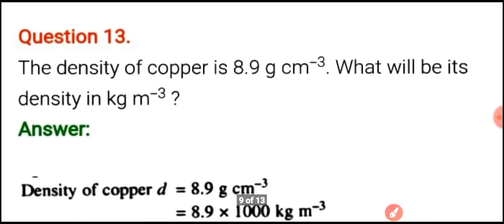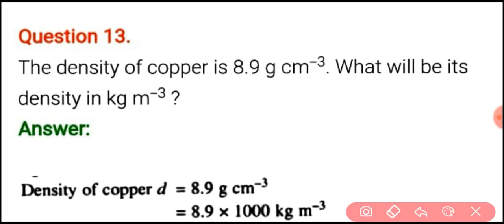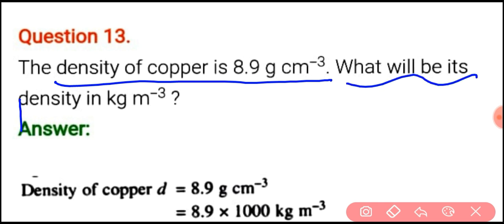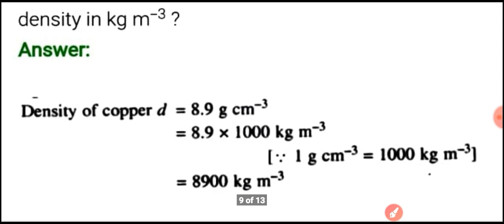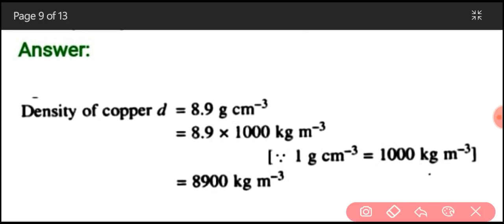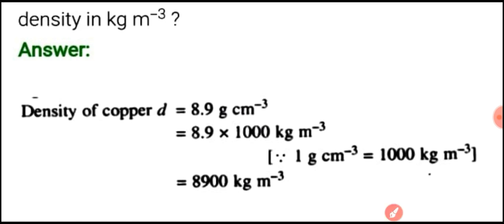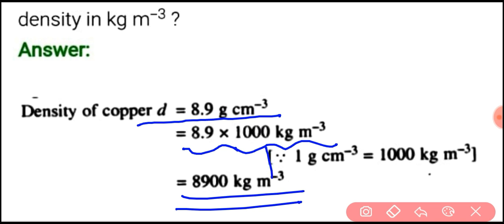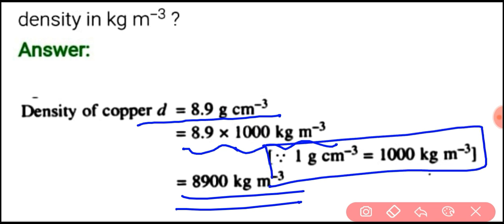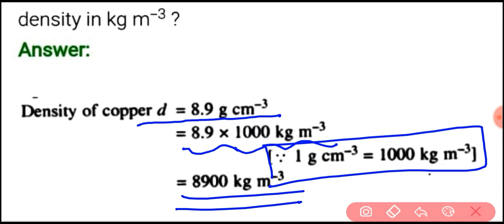Question number 13: the density of copper is 8.9 gram per centimeter cube. What will be its density in kilogram per meter cube? We have to convert gram per centimeter cube into kilogram per meter cube. We know that to convert, we multiply by 1000. So 8.9 gram per centimeter cube multiplied by 1000 gives the final answer 8900 kilogram per meter cube.